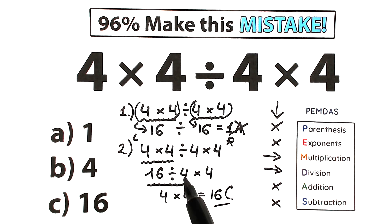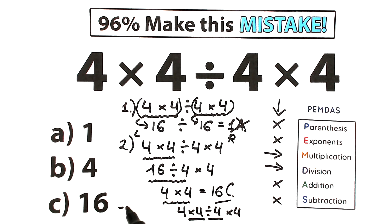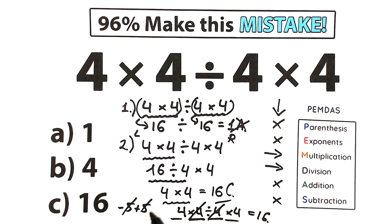The correct approach — left to right: multiplication, division, multiplication — gives option C, which is 16. And if you know a bit more math, look at this: in the middle of the expression you have times 4 divided by 4. That's like minus 5 plus 5 — it cancels to 1. So you're left with 4 times 4, which is 16. Whether you use PAMDAS step by step or the cancellation shortcut, you get the same answer: option C, 16.